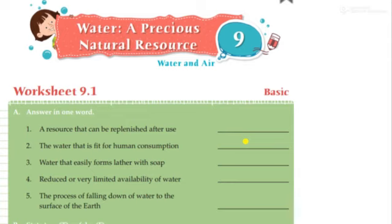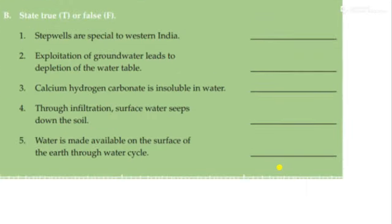Hard water forms scum — a white color precipitate — while soft water forms lather with soap. Now in the true or false section, water is made available on the surface of earth through the water cycle — yes, this is true, because it is due to the water cycle that we have water on the surface.